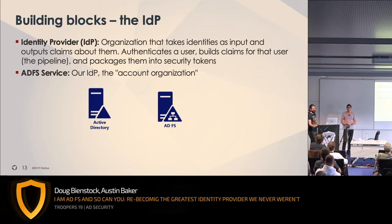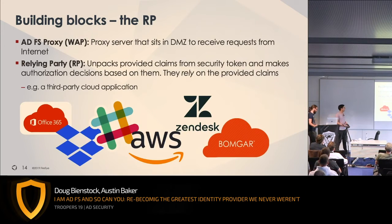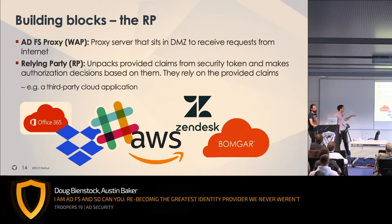ADFS is called the identity provider. Active Directory and the ADFS service together verify an identity, build up claims through the pipeline, and issue a security token. The receiving end is our relying parties — any sort of federated application, generally cloud-based. They receive a security token, verify it's valid, unpack the claims, and decide if the user can access it. Examples of relying parties include Office 365, Dropbox, Slack, AWS, Zendesk, and BombGar — all of which I've seen clients use with ADFS on red teams, and all of which have been compromised through ADFS attacks.